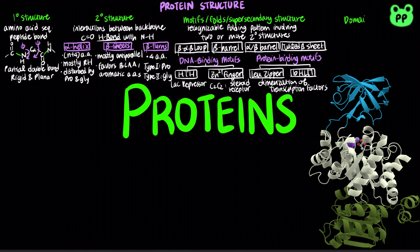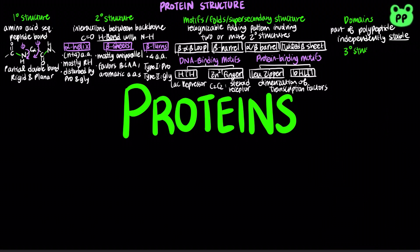A domain is a part of a polypeptide chain that is independently stable or could undergo movements as a single entity with respect to the entire protein. Different domains often have different functions, such as binding of small molecules or interaction with other proteins.